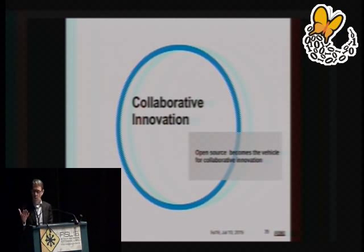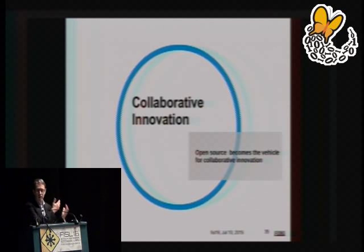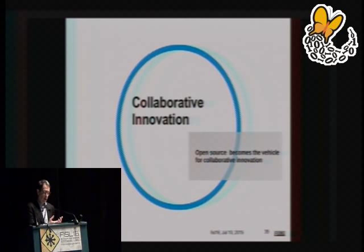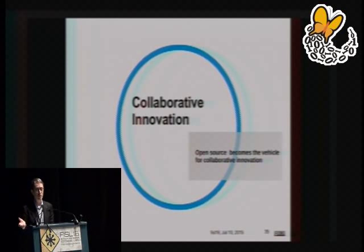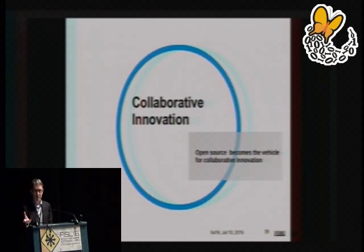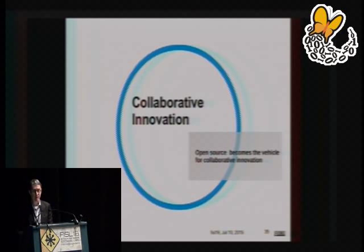Open source has become the key vehicle that enables this collaborative innovation. Companies working with open source software don't have to cooperate on the basis of complex contracts signed by lawyers that cost a fortune. No — they just have to work with open source software. The beauty of the four freedoms and the licenses is that the license attached to a file, to code, explains the rules of the game — what you can do with the code. So you don't need any contract. That's how open source enables cooperation between companies that can even be competitors.